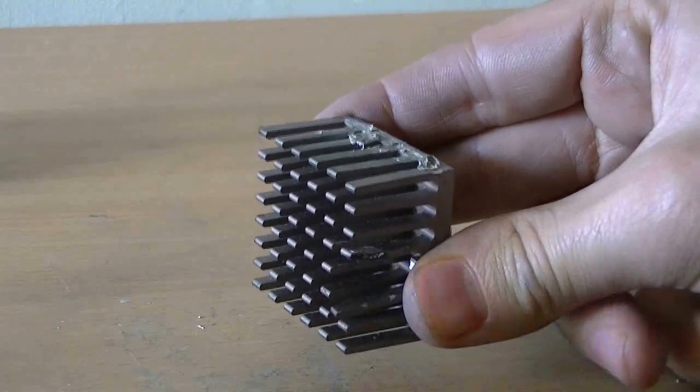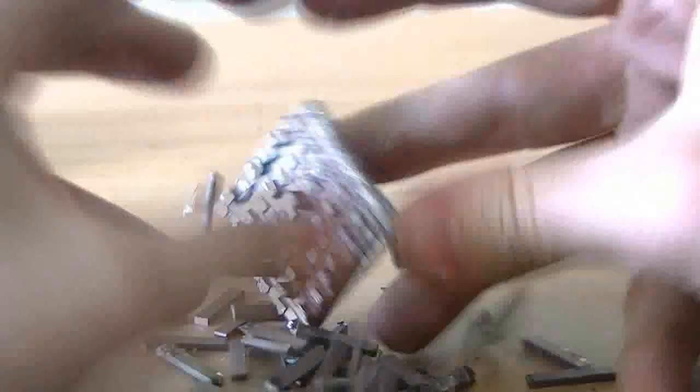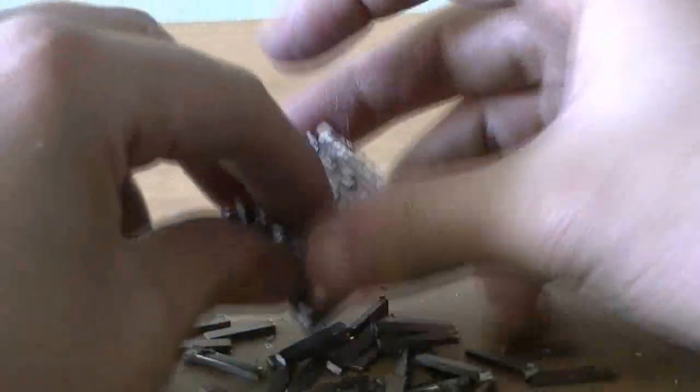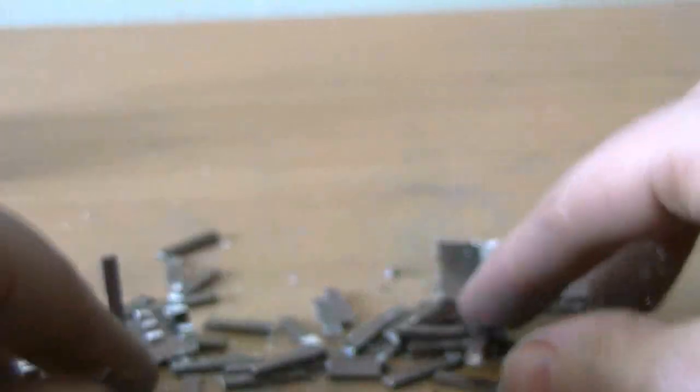Now let's see what the gallium has done to the heat sink. Hmm, it looks a bit... Whoa! It's incredibly brittle. In fact, I think I could snap it in half. The gallium has diffused with the aluminum and just totally weakened the structure. Amazing.